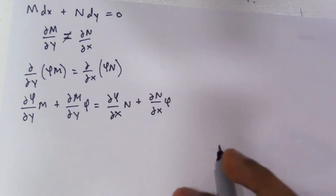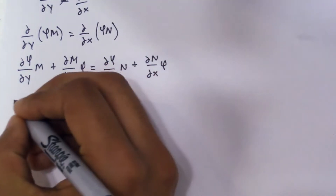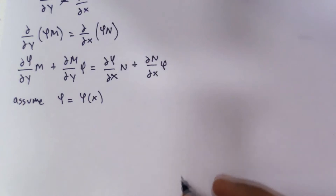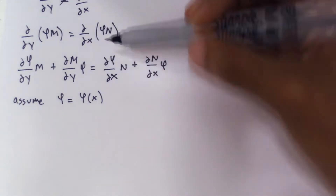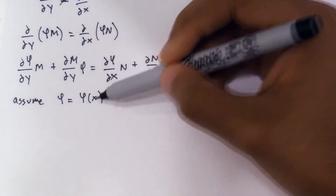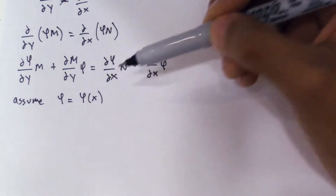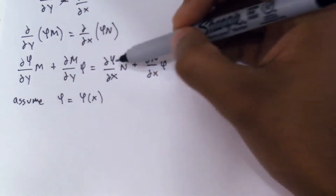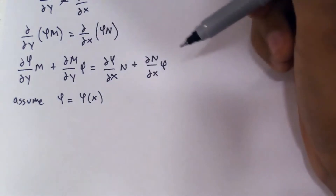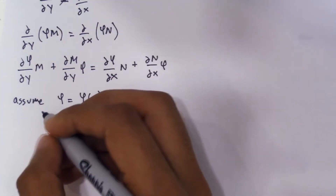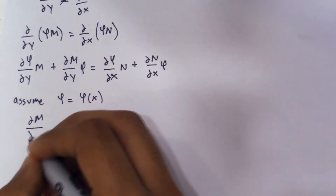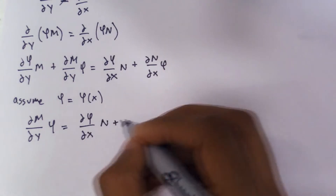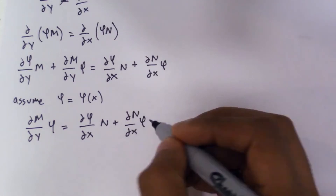Now we have this equation. We're going to assume phi is a function of x. If you remember partial derivatives, if phi is a function of x and you take the partial derivative of phi with respect to y, it's just going to be zero because there are no terms of y. So this term becomes zero. What remains is: the partial of M with respect to y times phi equals the partial of phi with respect to x times N, plus the partial of N with respect to x times phi.